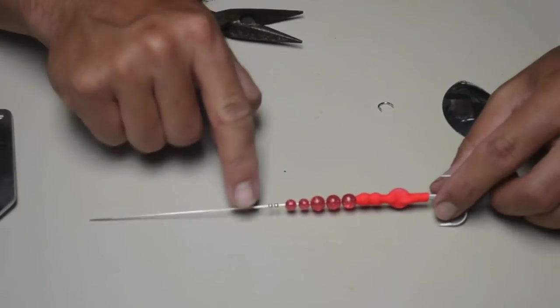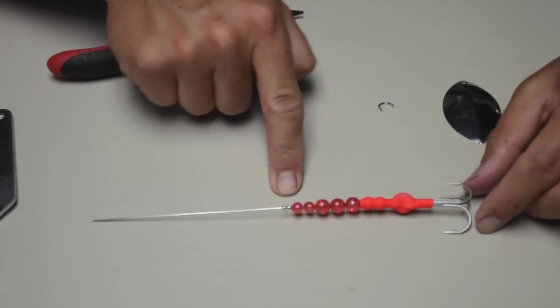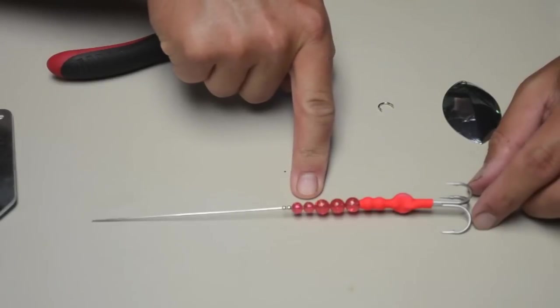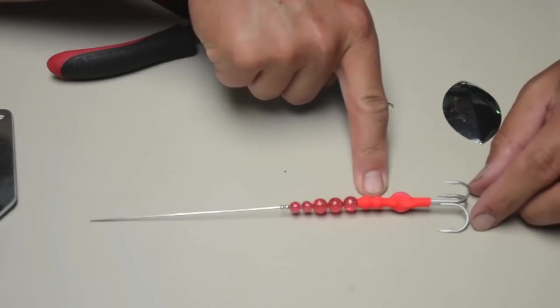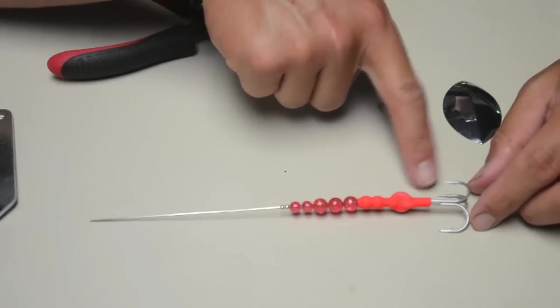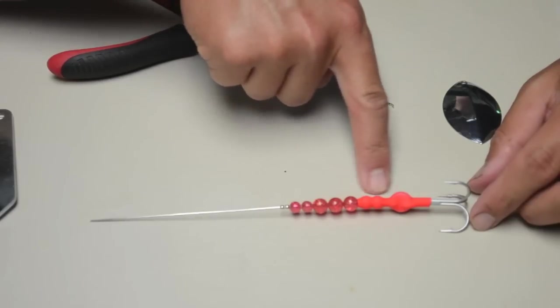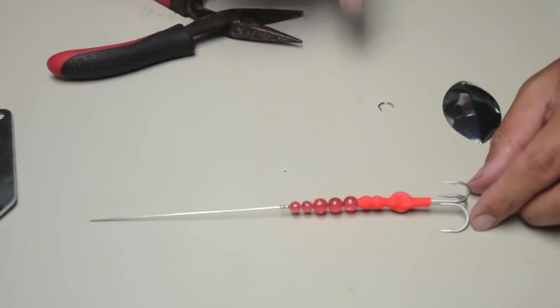So we have the two metal beads, two 6mm beads, three 8mm beads, two 6mm beads under the tubing, our split ring, and then that's attached to the hook. And all of that is bound together by the surgical tubing.